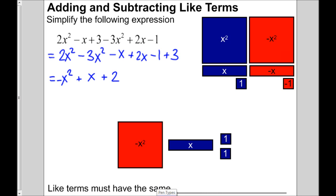That's how we use the tiles to help us simplify polynomials. Looking at what we wrote: these two x squared terms are like terms — we have 2 of them and take away 3 of them, leaving negative 1. If you don't see a number, there's actually a negative 1 there. Then negative x plus 2x: 2 take away 1 is 1. And negative 1 plus 3 makes positive 2. So we group by like terms and simplify.